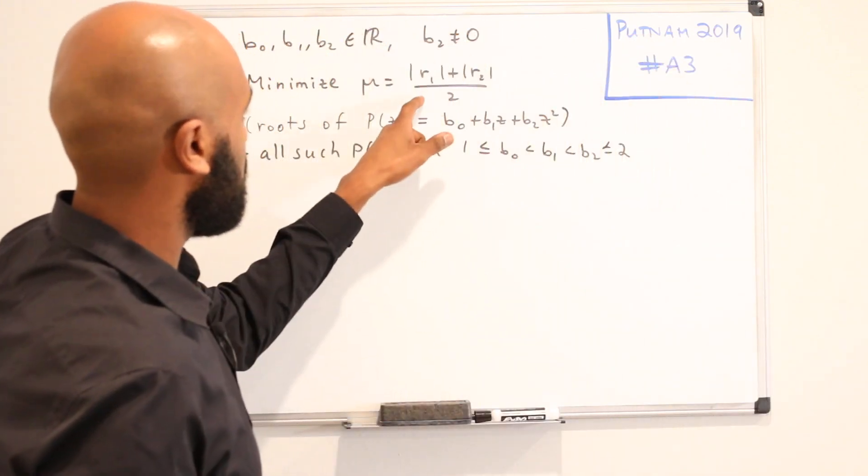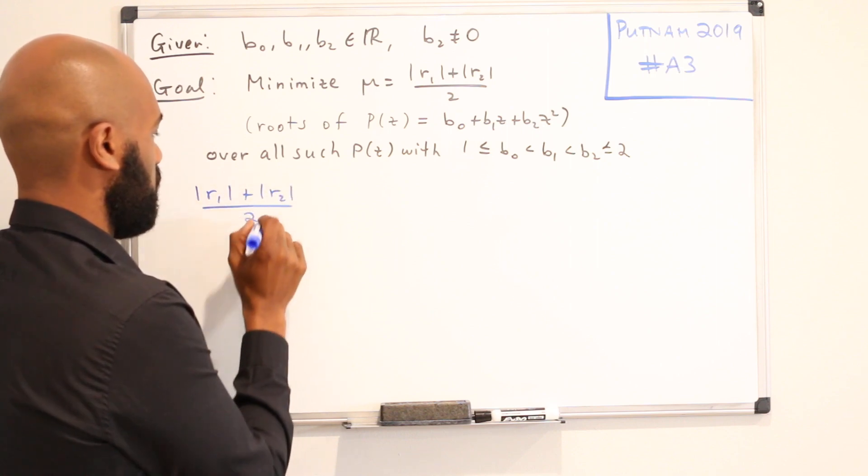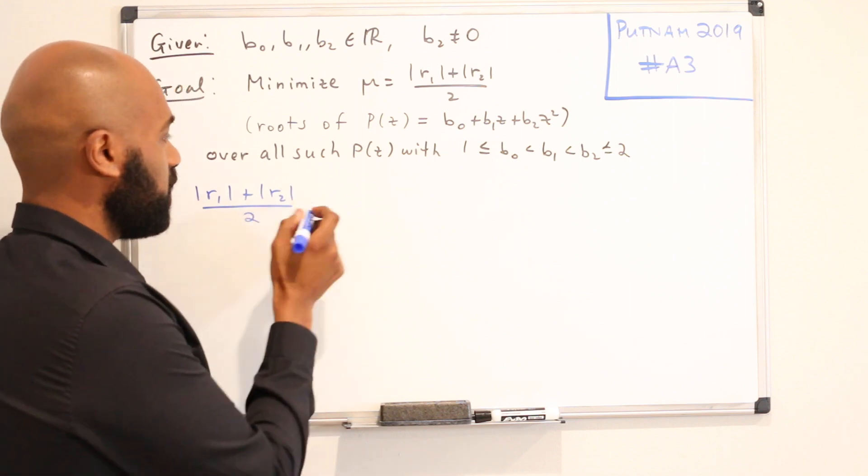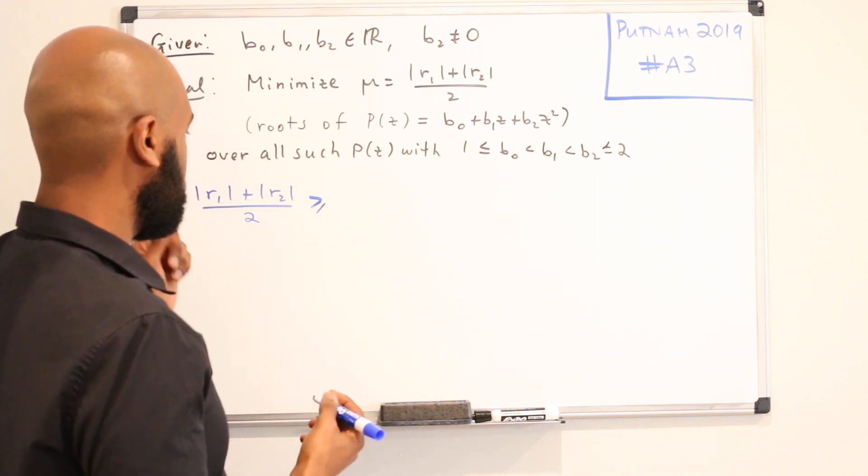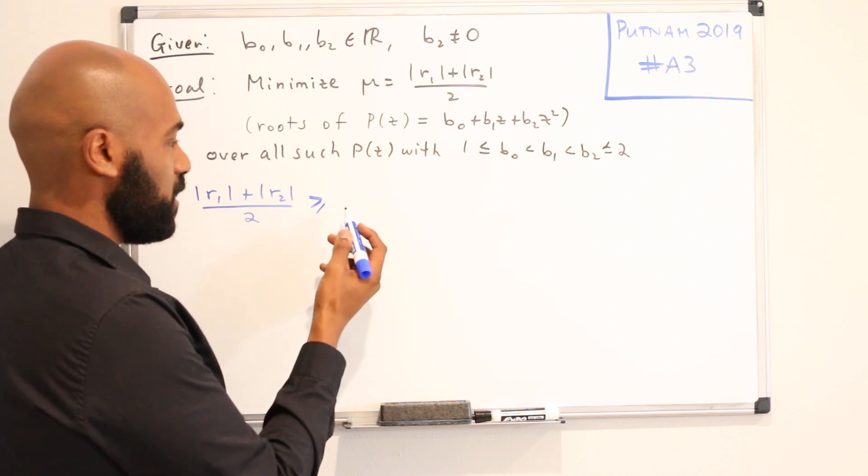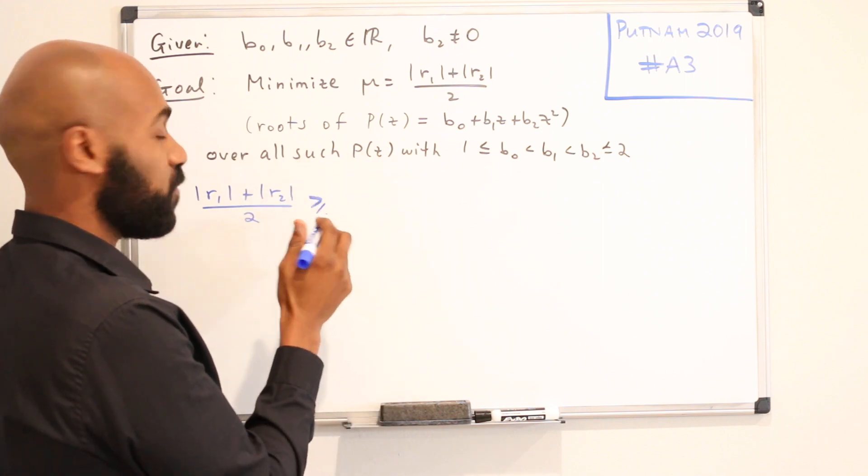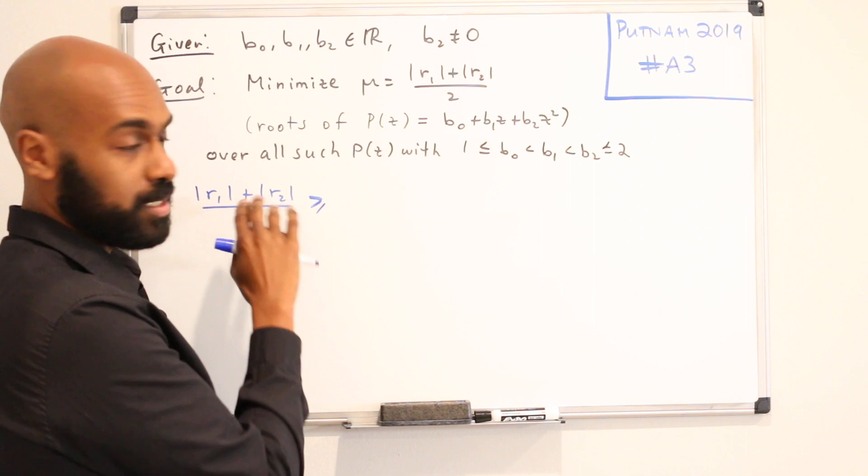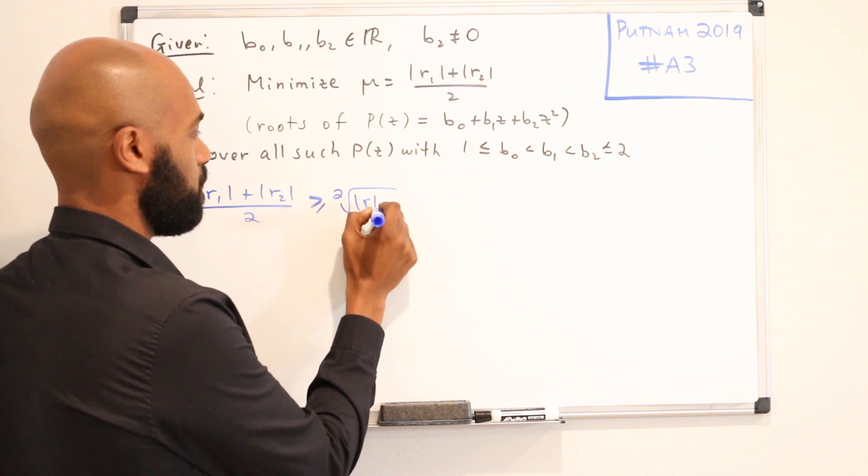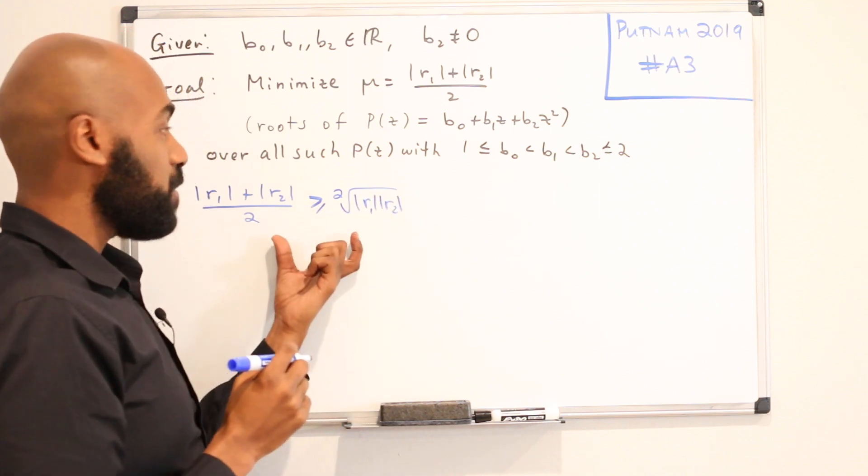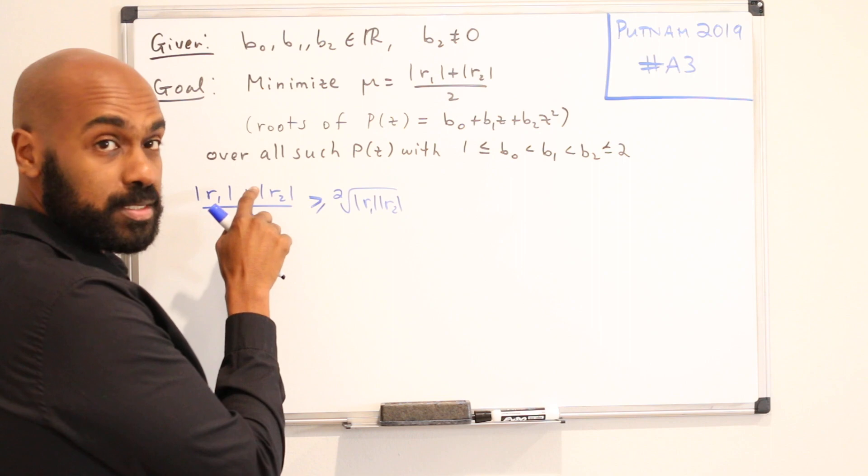The first thing I want to notice is something about this expression here that we're trying to minimize. This is the sum of the moduli of the roots, which is their arithmetic mean, and this is at least their geometric mean. This inequality is known as the arithmetic geometric mean inequality. The geometric mean is the product of those numbers involved, and then taking the nth root of that product where n is the number of numbers you're considering. Here we have two numbers. We're going to take the square root of their product. The arithmetic geometric mean inequality holds with equality if each of these parts here are equal.